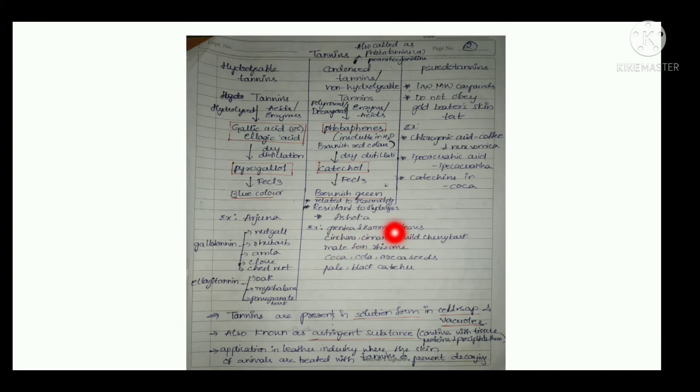Now we come to the properties. Tannins are present in solution form in cell sap and vacuoles. They are also known as astringent substances. Astringent substance means the substance which combines to the tissue proteins and forms a precipitate. Tannins are also used in medicines like as mild antiseptic and for the treatment of diarrhea.